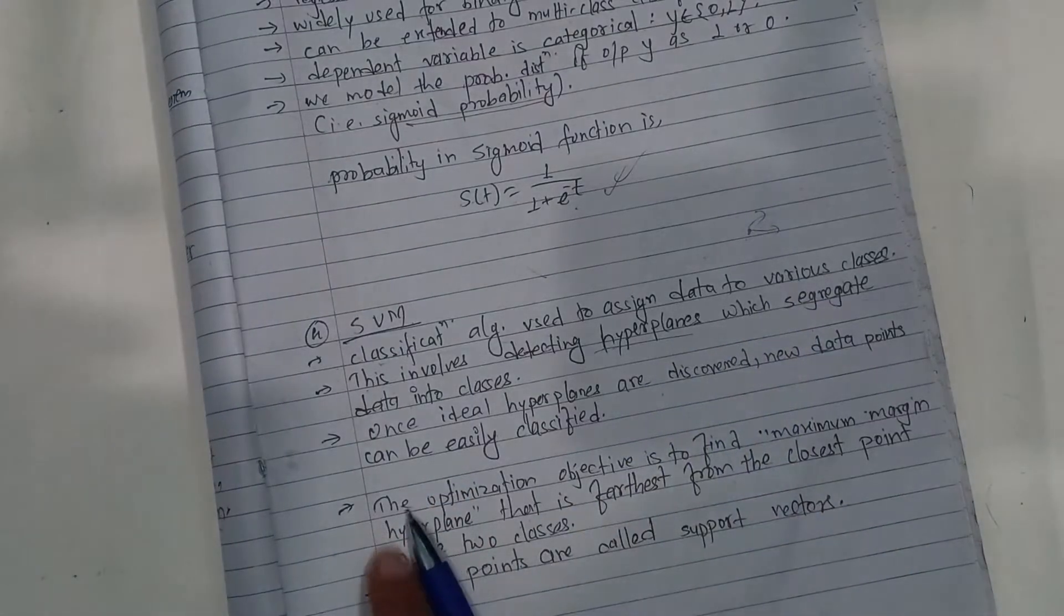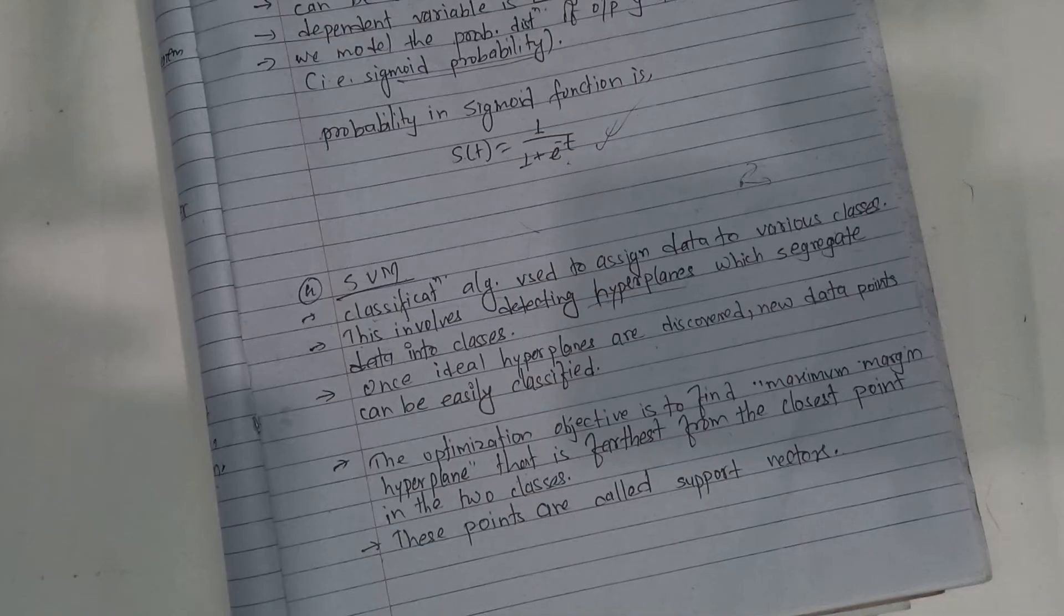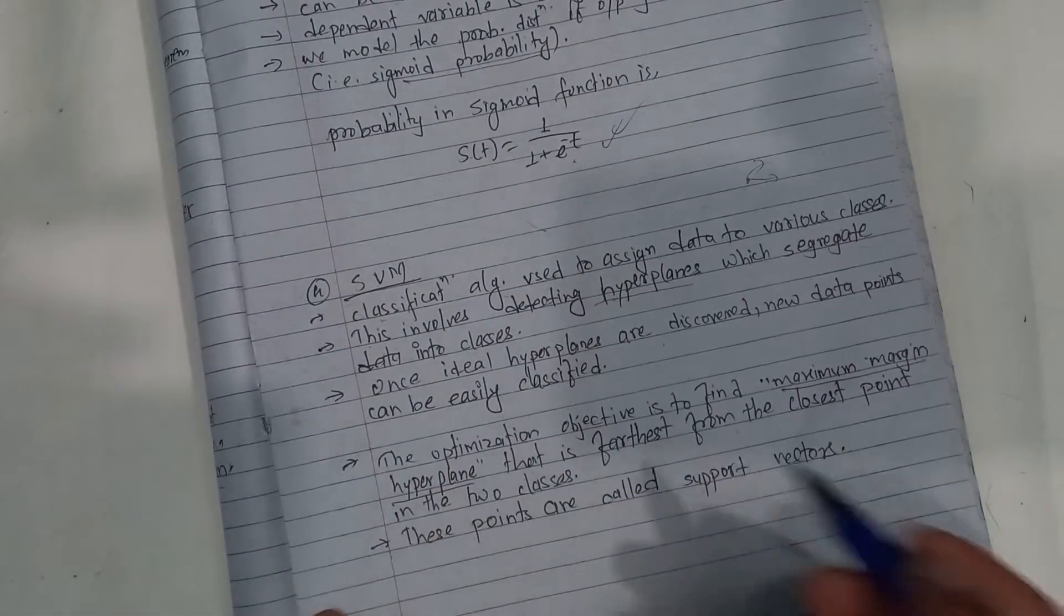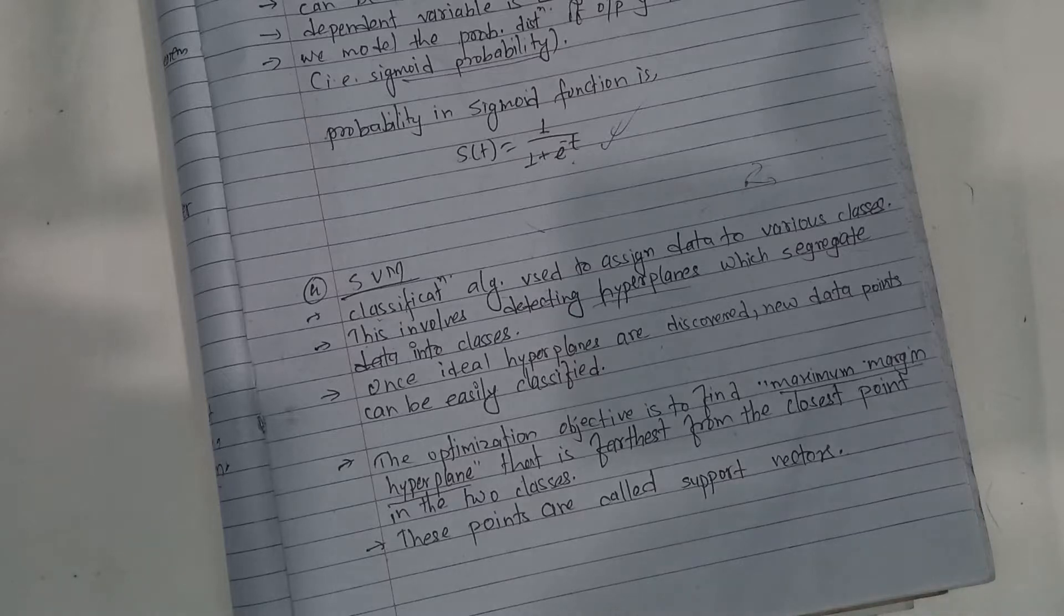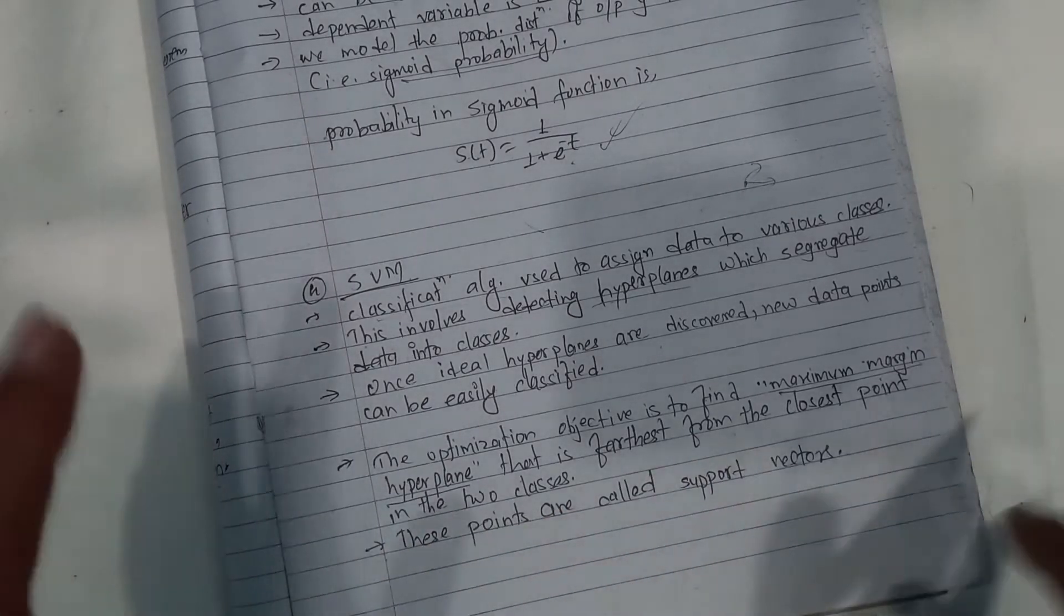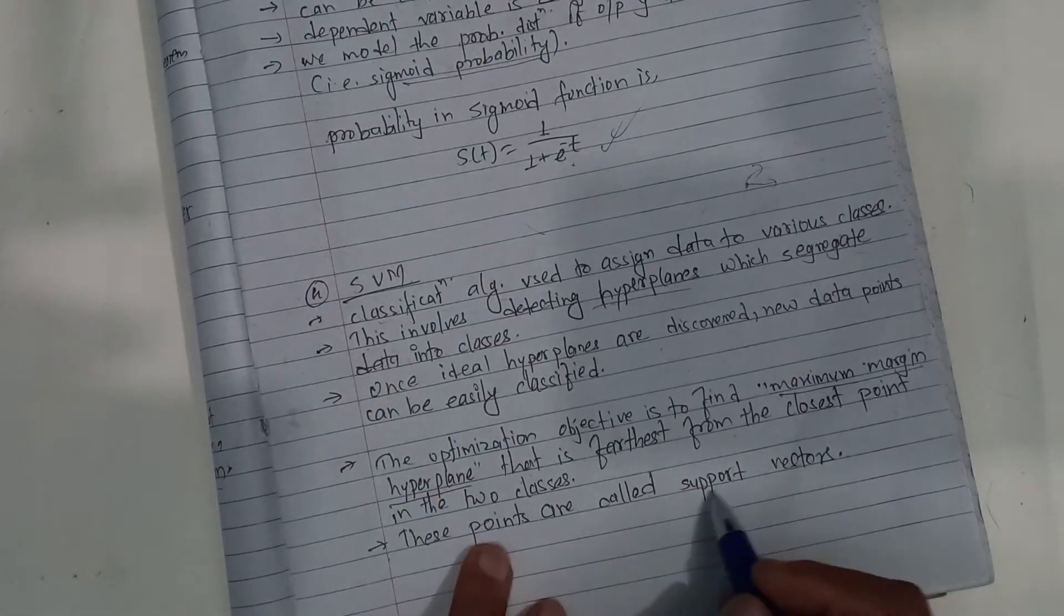So, the optimization objective is to find the maximum margin hyperplane. The epoch symbol is used to support vector.